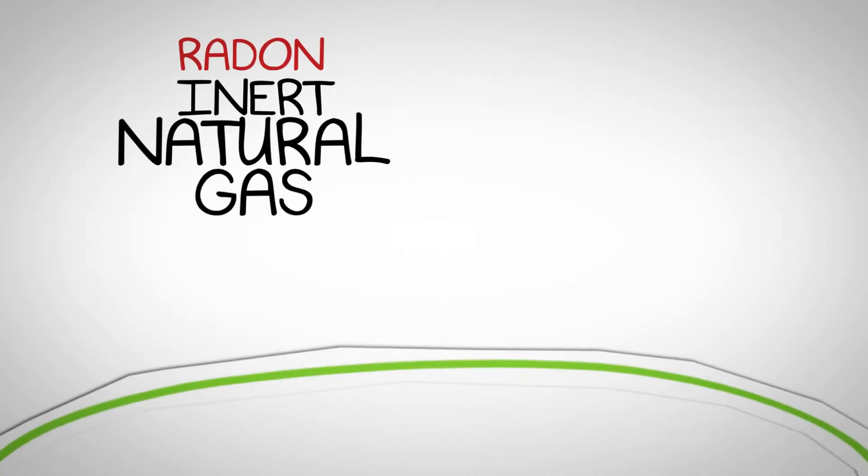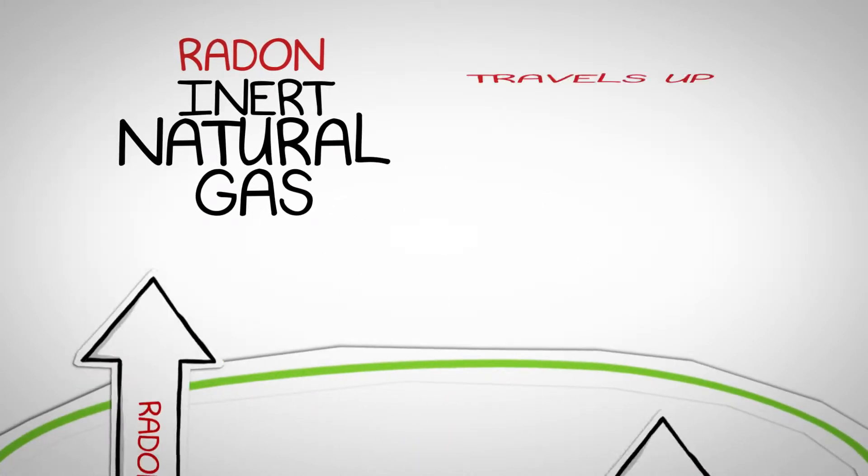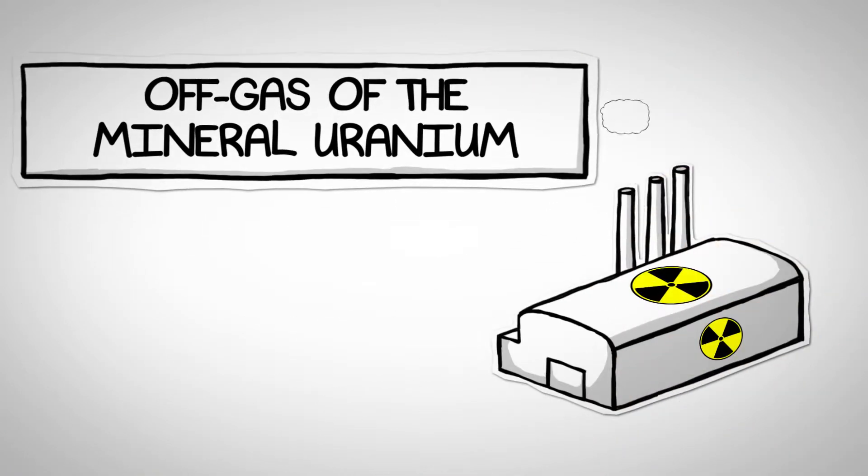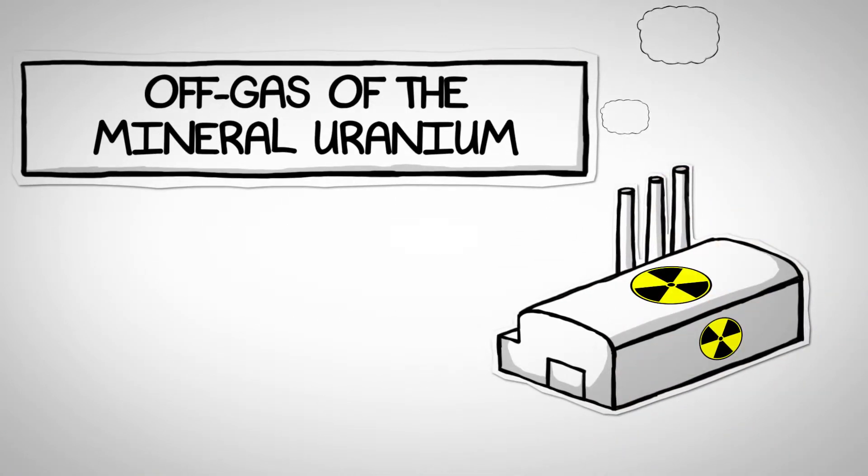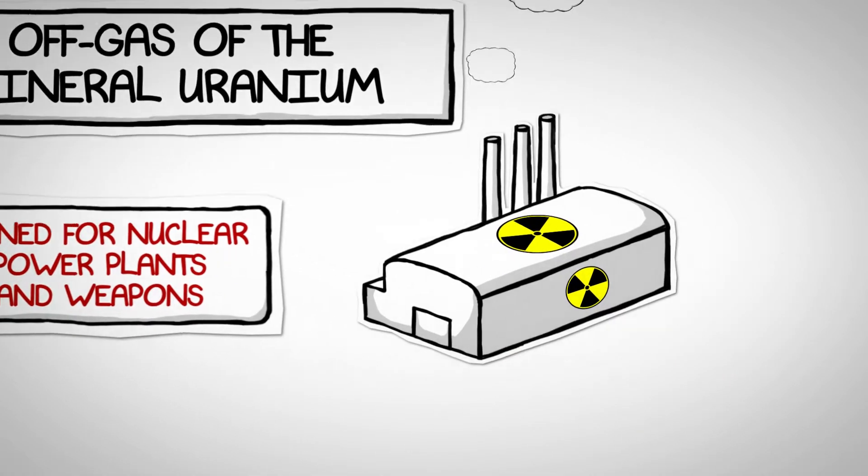Radon is an inert, naturally occurring radioactive gas that travels up out of the soil. It's an off-gas of the mineral uranium which people mine for use in nuclear power plants and nuclear weapons.